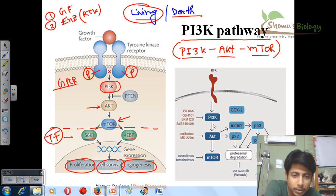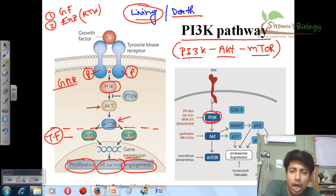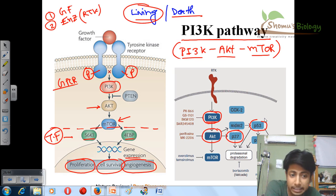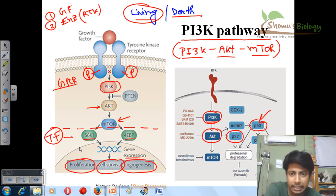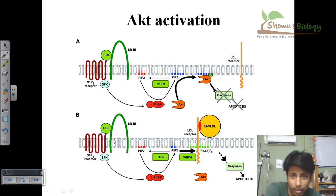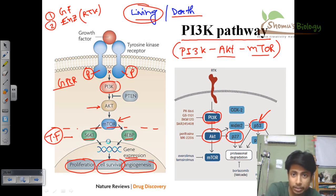PI3K is at the heart and start point of the pathway, in direct contact with receptor tyrosine kinase or GPCR. Additionally, once AKT is produced, it can control P53 and P27 — guardian genes inside our body. This makes it a hugely important pathway for determining whether a cell lives or dies according to the situation.